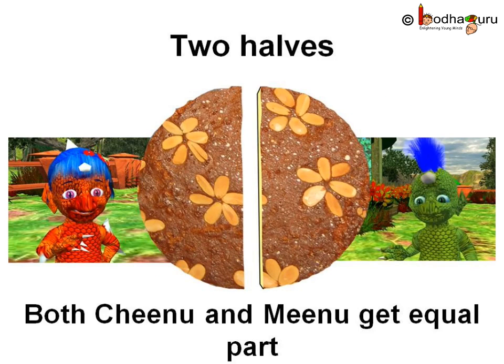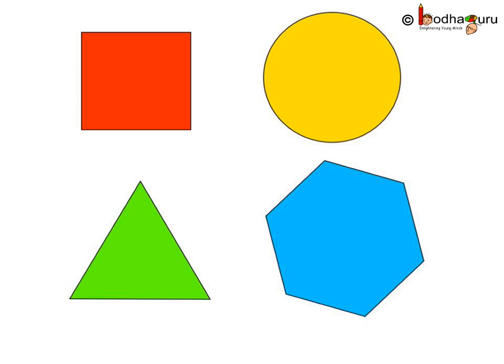If the twins had themselves cut the cake into two equal parts like this, then both of them would have got a half part of equal size — no question of fighting over the cake then, right? But can only a rectangle or a circle be cut into half? No, we can cut many shapes into halves. The main thing is that a part of a whole object is called half only when both the parts are of the same size.